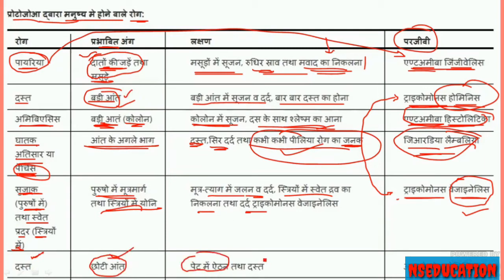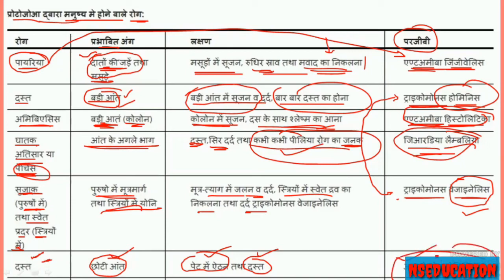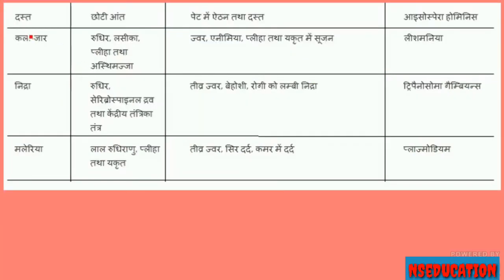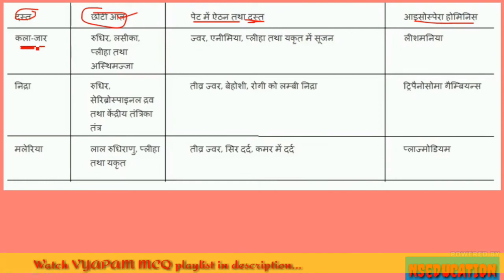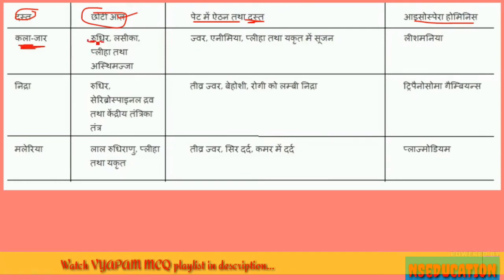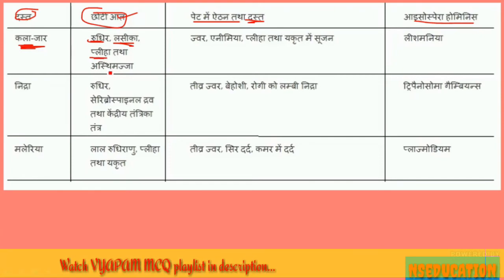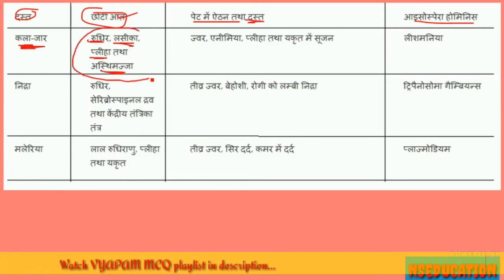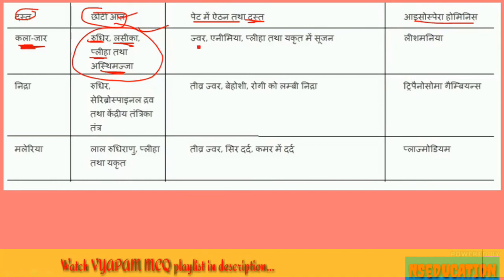This is a little bit of a problem here. This is Isospora hominis — Isospora hominis, Isospora hominis. Then this is the blood patch, which is a problem here — the blood patch, which is one of the processes which is a problem here.